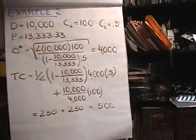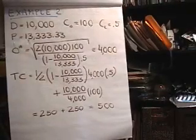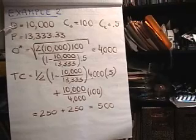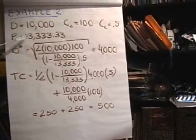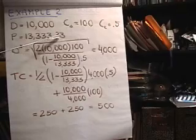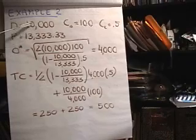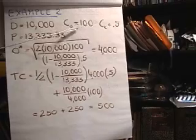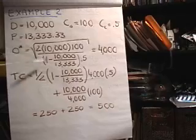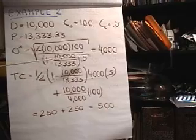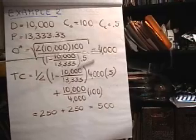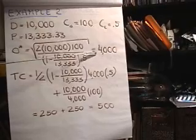So as an example, let's assume that our demand is 10,000, the annual production capacity is 13,333 and a third. So you can see that we don't have to produce all the time. We only have to produce about three-fourths of the time. Let's say the setup cost is $100 and the carrying cost is 50 cents per unit per year. So plugging into the formula, we see that the optimal quantity to produce each time we produce is 4,000.